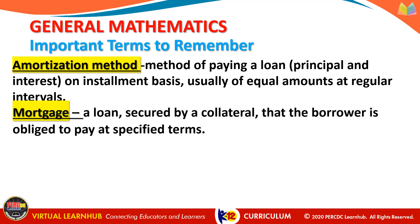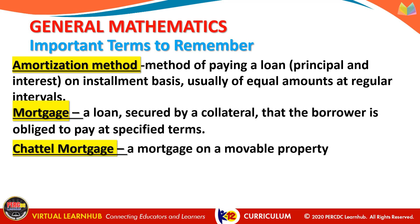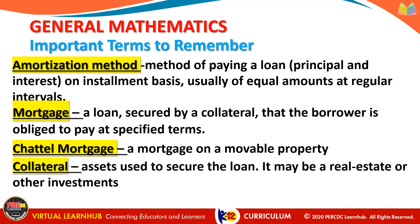We also have the mortgage. A mortgage is a loan secured by a collateral that the borrower is obliged to pay at specified terms. We also have a chattel mortgage, which is a mortgage on a movable property — that is, a property that is moving. The best example is an automobile. We also have collateral, which are assets used to secure the loan. It may be real estate or other investments.